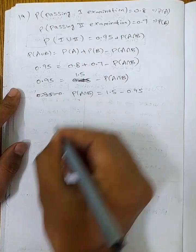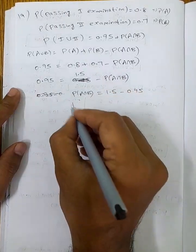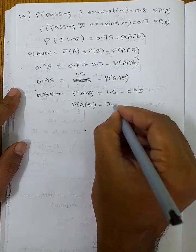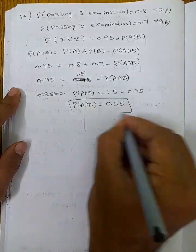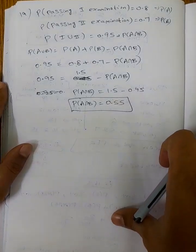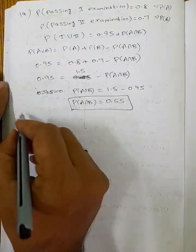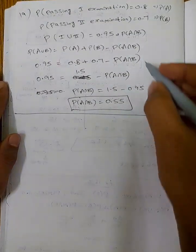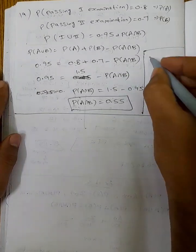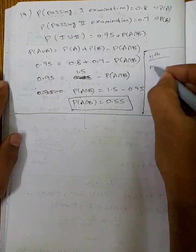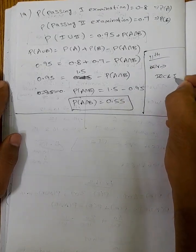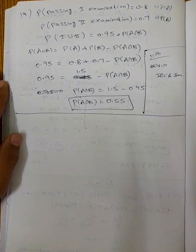So, P of A intersection B is equal to 1.5 minus 0.95 = 0.55.